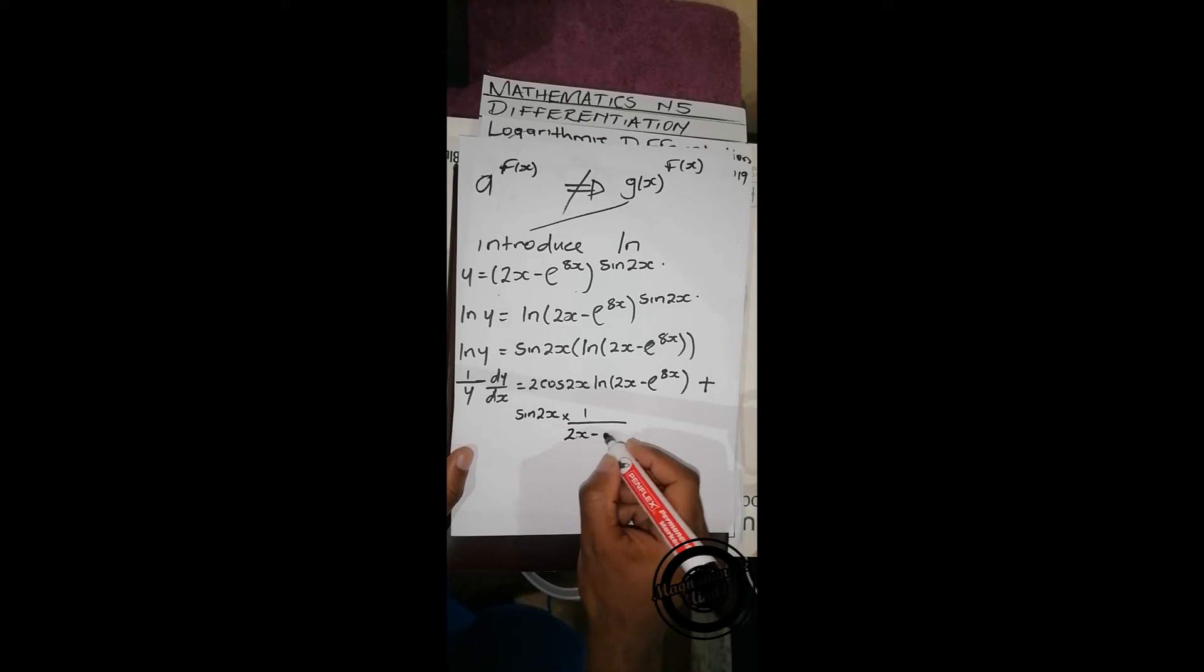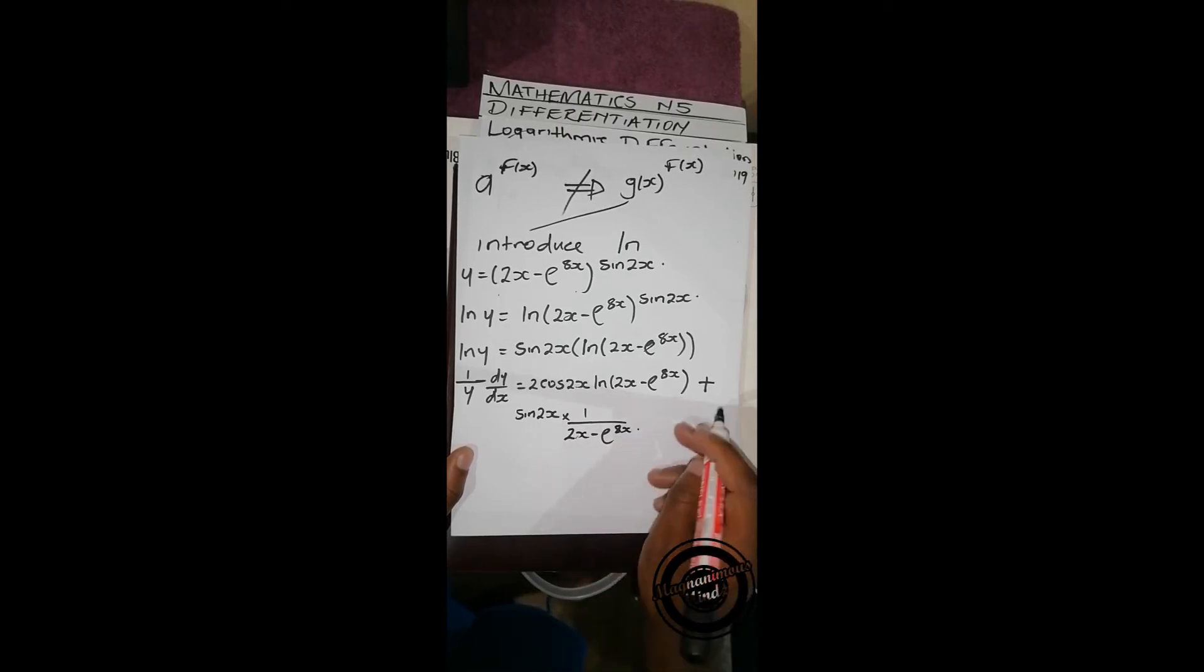2x - e^(8x). Then we're differentiating the inner function, and we get 2 - 8e^(8x).